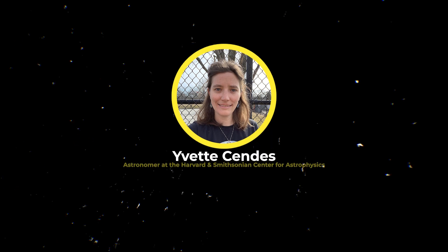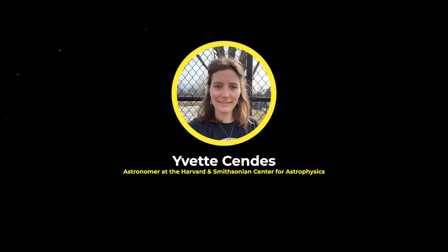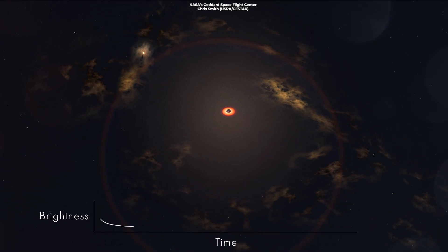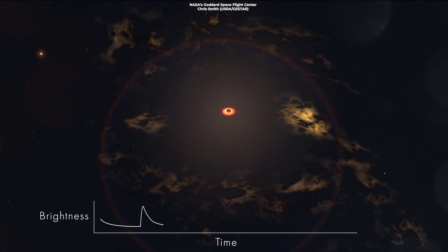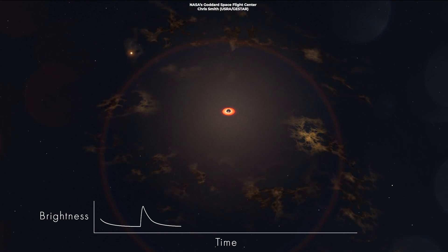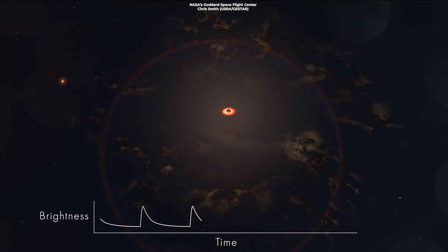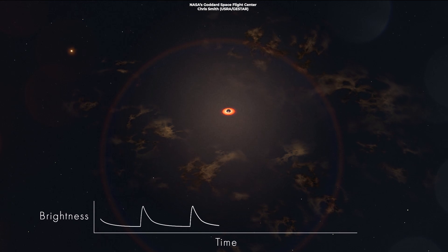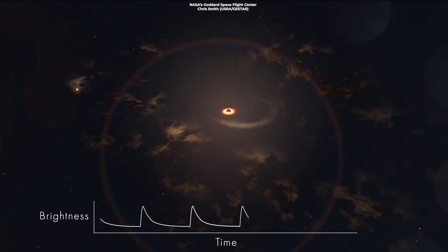Then on June 30, Yvette Sindes, an astronomer at the Harvard and Smithsonian Center for Astrophysics, reported another detection of a delayed flare. Dr. Yvette and her colleagues used multiple observatories and reported a sudden spike in radioactivity that launched more than two years after the black hole's initial gobbling.